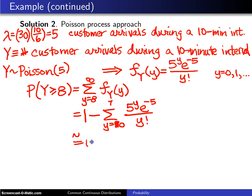This turns out to be 0.1334. The way you would calculate this quantity in R is with the command 1 minus ppois, and the two parameters will be 7, which is the upper limit here, and the lambda parameter, which is 5. That will give you 0.1334.